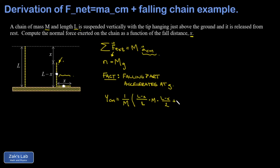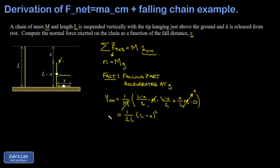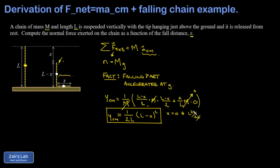For the second term - the part laying on the table - its y coordinate is zero, so that term vanishes. Its mass is (x/l)*m, but multiplying by y = 0 gives zero anyway. After canceling m, I end up with y_cm = (1/(2l)) * (l - x)². As a sanity check: when x = 0 (chain hasn't started falling), y_cm should be l/2. Plugging in x = 0 gives l²/(2l) = l/2. ✓